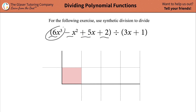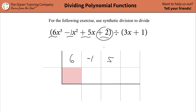Whatever the coefficient is of your x cubed term goes first — that's a 6. Whatever the coefficient of your x squared term is, remember there's a 1 there, so it's negative 1, that goes next. Then it's the coefficient of x, which is positive 5 — I'm going to leave out the sign when it's positive, because leaving it out assumes it's positive. And then the last constant term is going to be a 2. So we've taken care of the dividend.